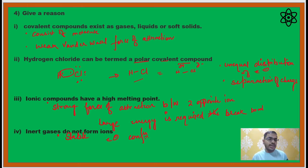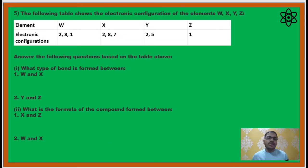Let's move to the next question. Here you are given four elements W, X, Y, Z whose electronic configurations are provided to you. Now the first question which is asked to you is: what type of bond is formed between W and X?